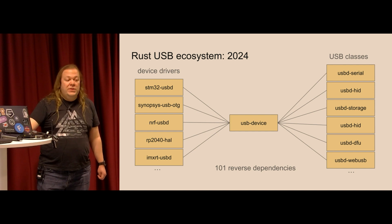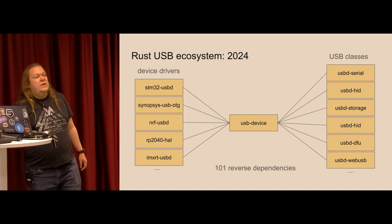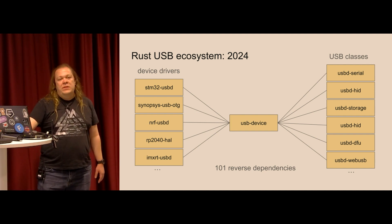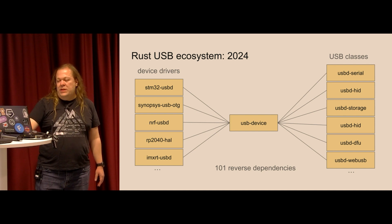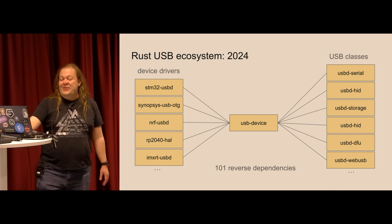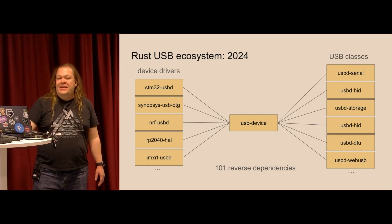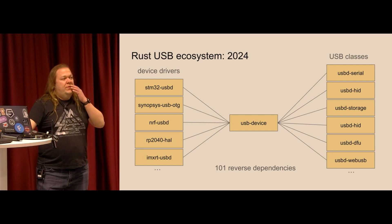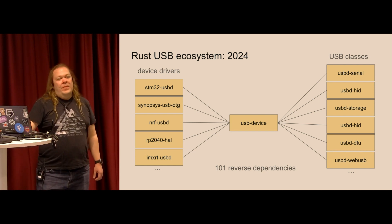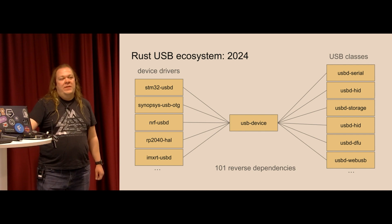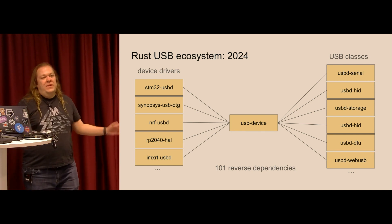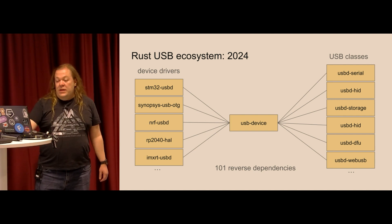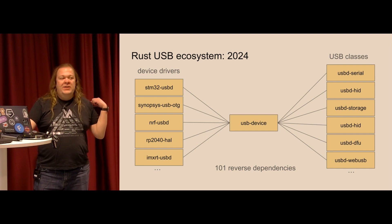There are also a lot of USB classes: an HID class which can be used for keyboards — there's even a complete keyboard project written in Rust using this — classes for storage, and even a WebUSB class which implements the interesting concept of controlling your USB device from a modern browser. This is really convenient when you want to simplify life for your user — you can implement a website, connect it to your device, implement automatic firmware update, whatever you need. USB device now has 101 reverse dependencies, including project crates, HAL crates, device drivers, and USB classes.